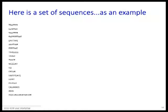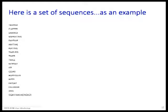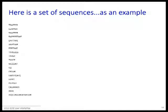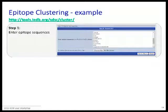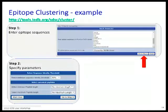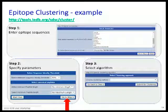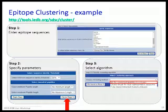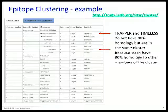Let's see how it works. Here are some peptides with funny sequences: trapper, clapper, snapper, wrapper, daytime, anytime, pertime. These are actually legitimate peptides — the tool won't allow you to enter Q, for example, because Q is not an amino acid. We put them in along with some others, go to step two, select the identity threshold and the method we want to use, and off we go.